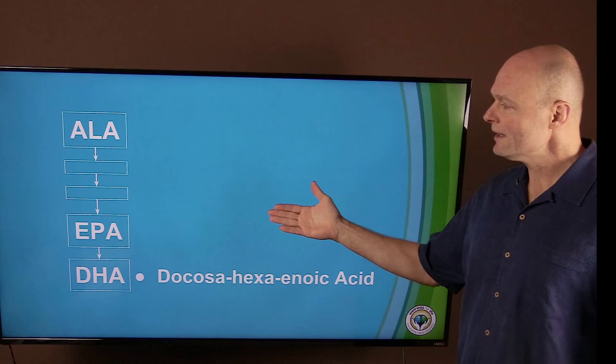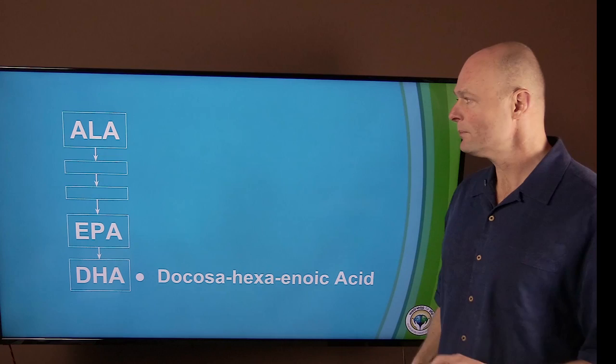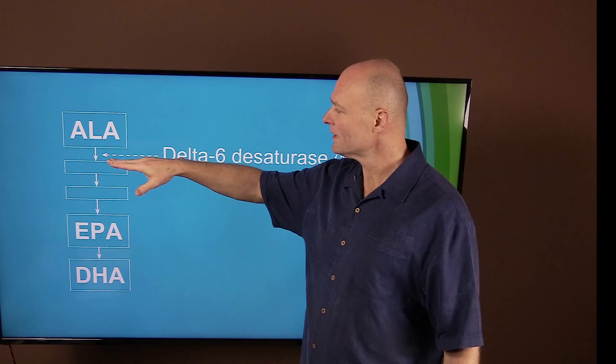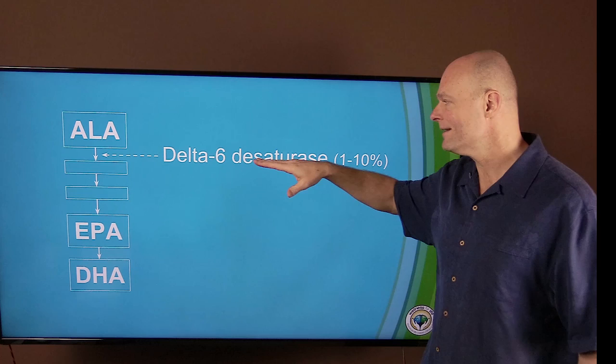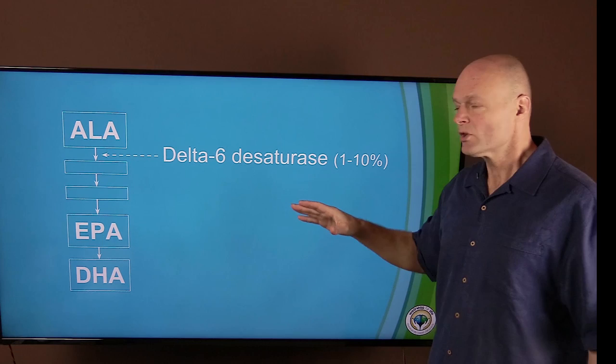So you would think then that if I just get enough of the flax oil, then the body can make all of the stuff that it needs. Well, unfortunately, it's not quite that simple because there's something called a rate limiting step. This step here, this conversion, only happens if we have enough of an enzyme called delta-6 desaturase.